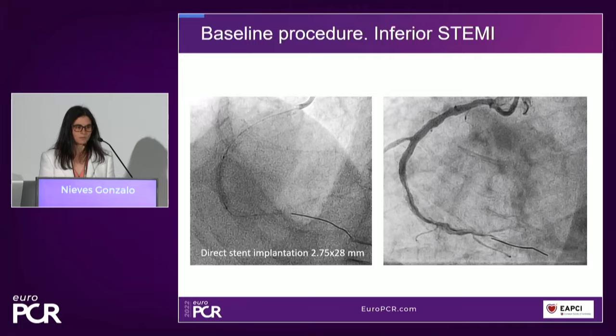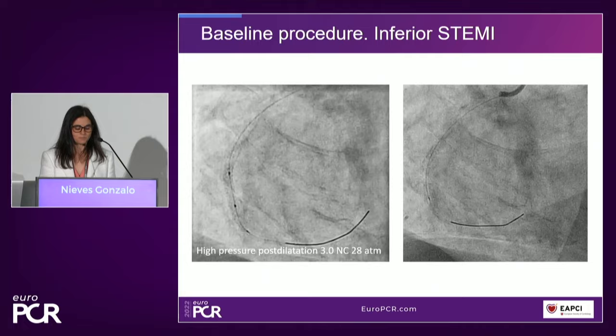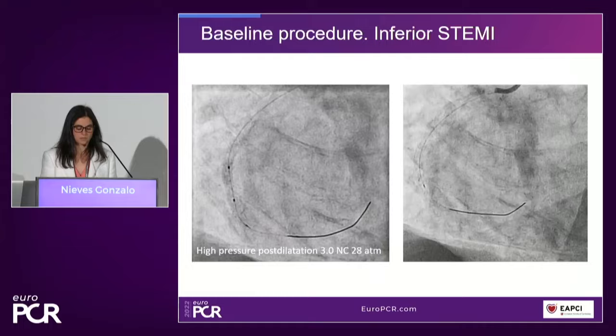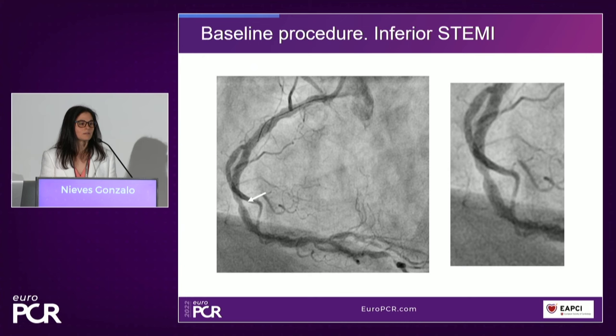The operators tried to correct this with high-pressure post-dilatation with a non-compliant balloon of 3.0. This is the post-dilatation result. They were really not able to correct the under-expansion. By angiography it looks like under-expansion, but they accepted the result. This was the final angiogram from this patient. Some still images highlight the final result and the problem.